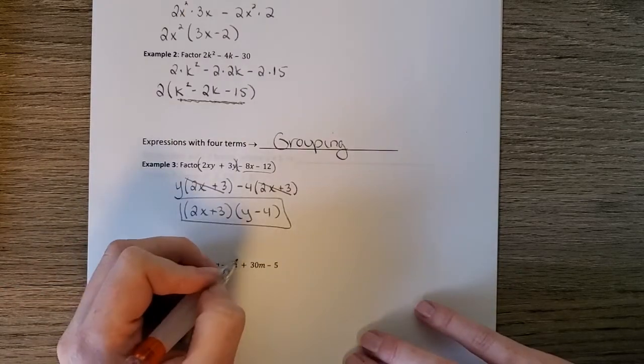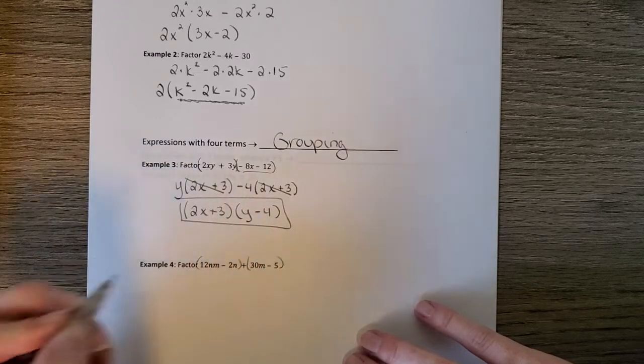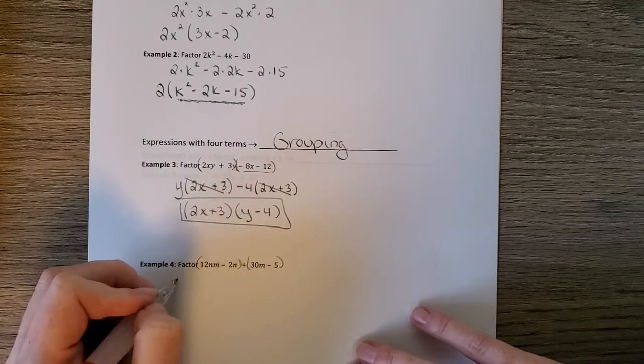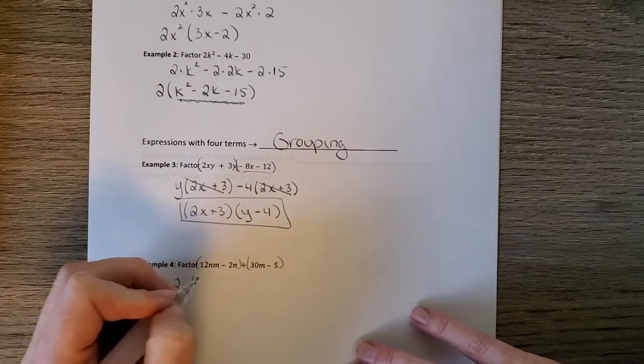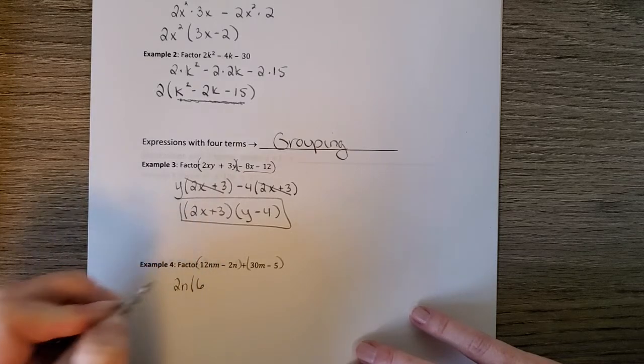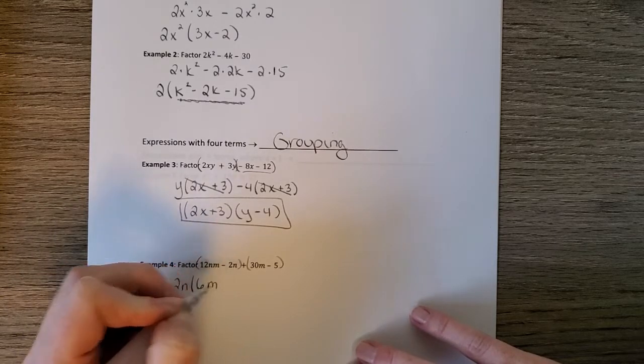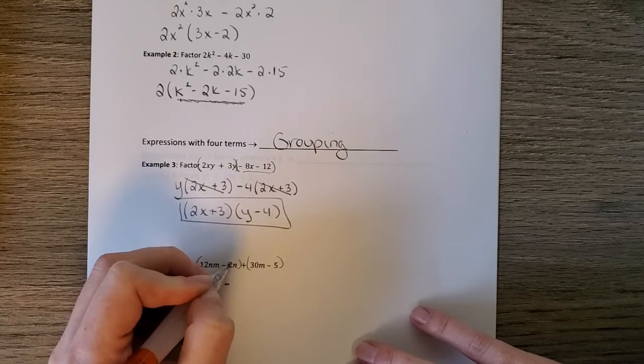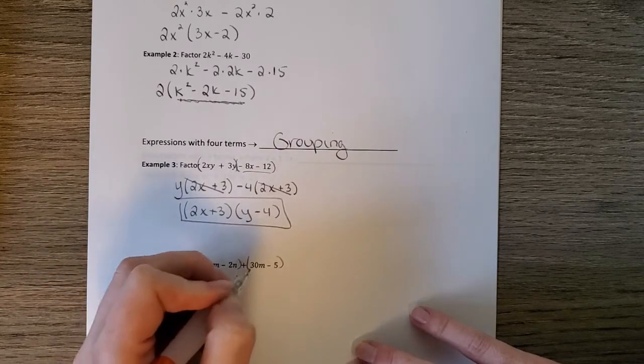Looking at the next example, remember this is just a review of what we've done the rest of the week. Its GCF is 2n. When we factor that out, 2 times 6 is 12. We have the n, so we need m. And then 2 times 1 is 2.